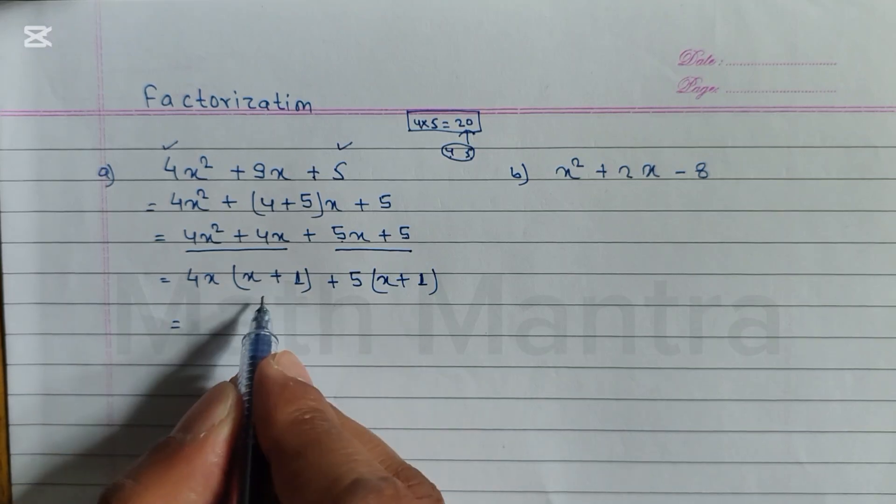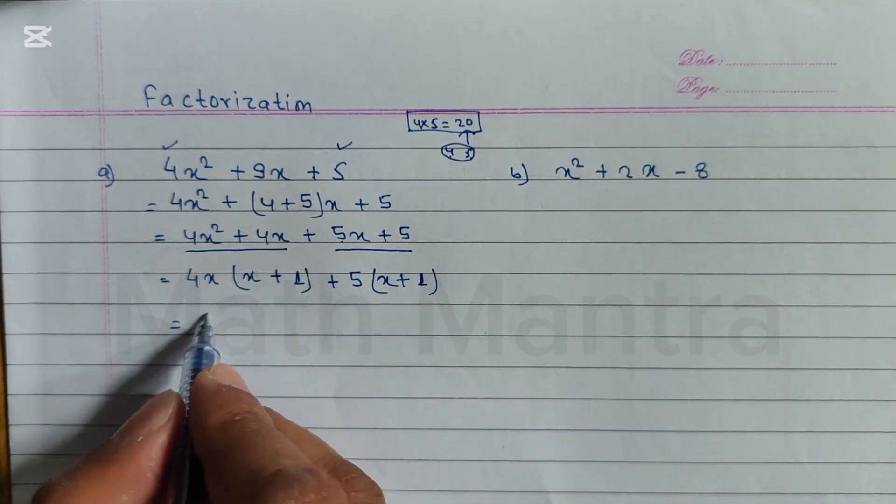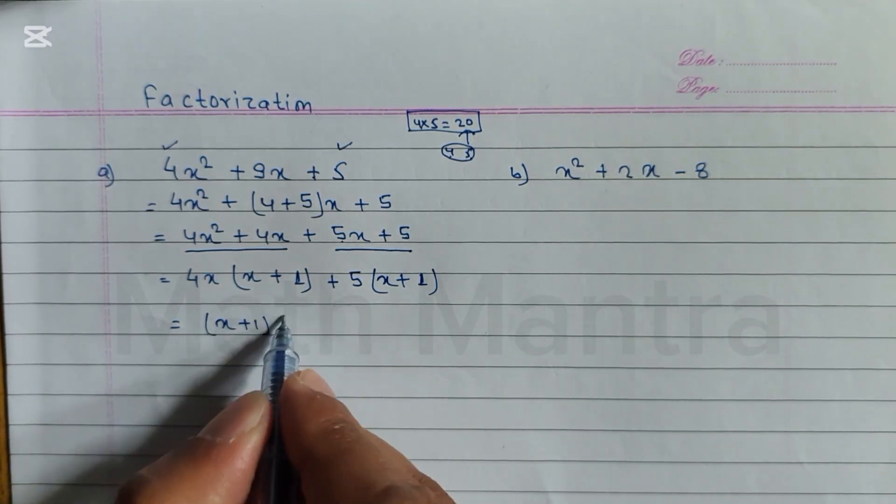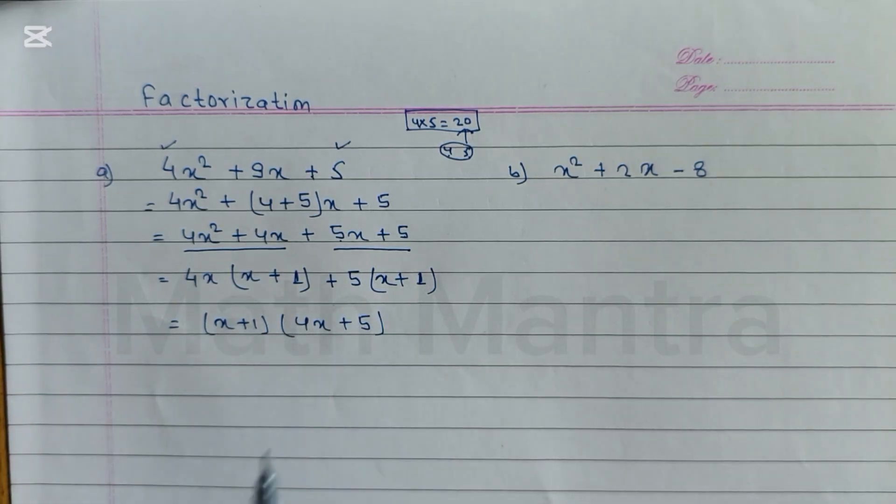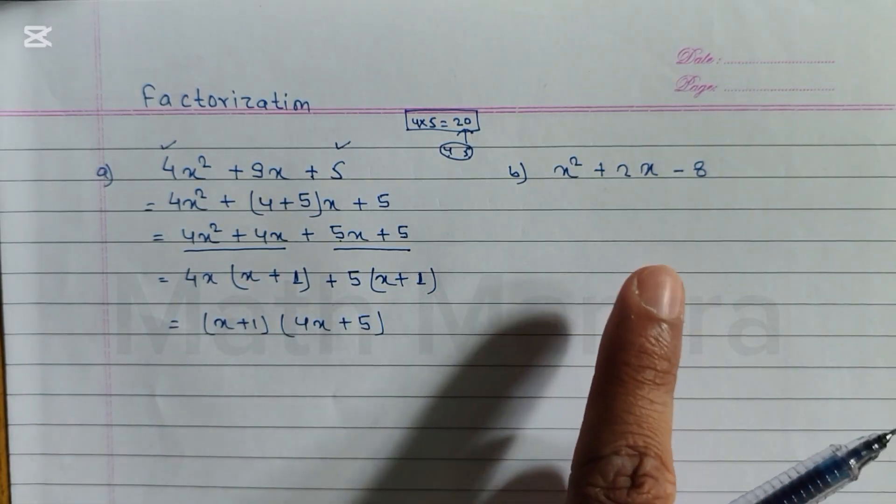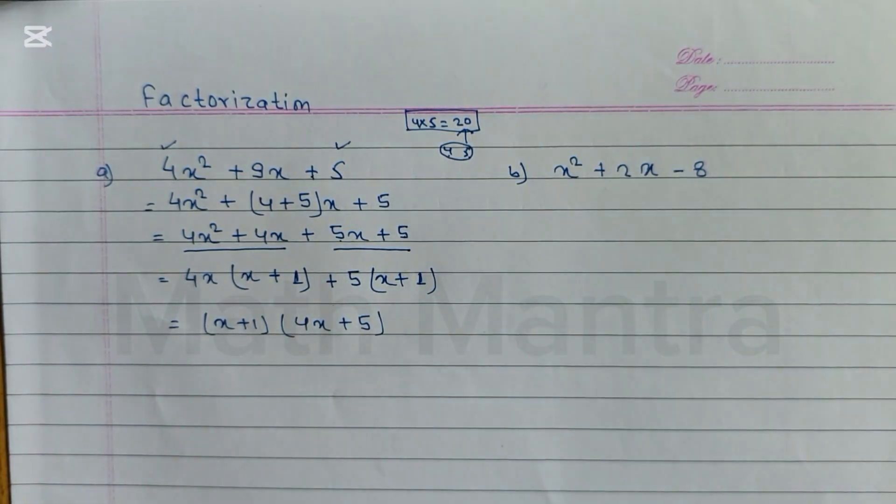Now you can see (x + 1) and (x + 1), so we can take (x + 1) common and the remaining is (4x + 5). Hope you understand this factorization. Please comment the answer of this question number b.